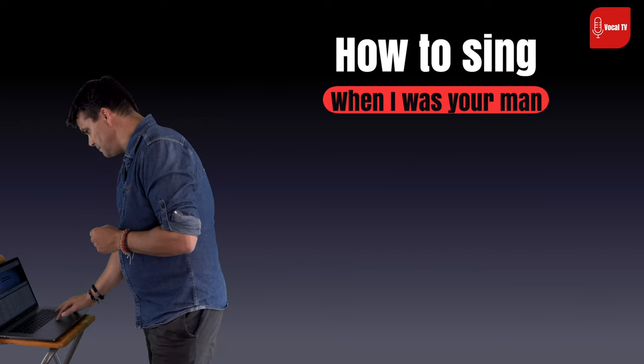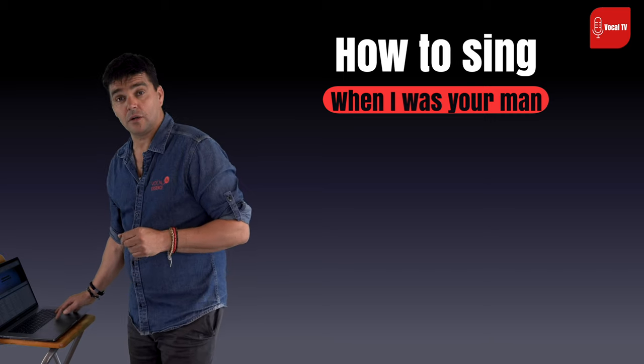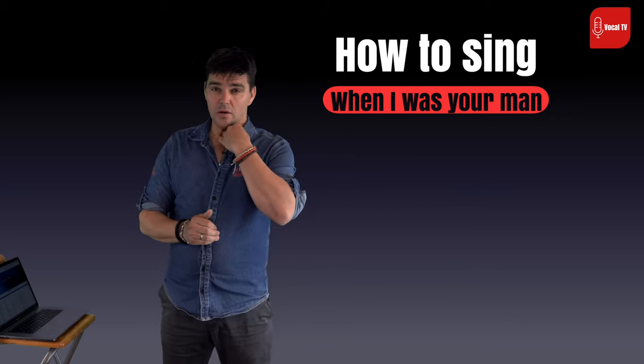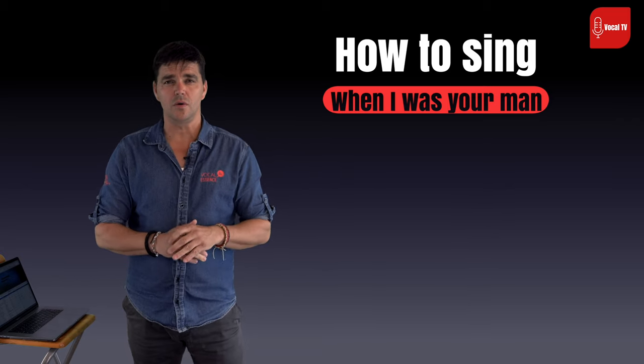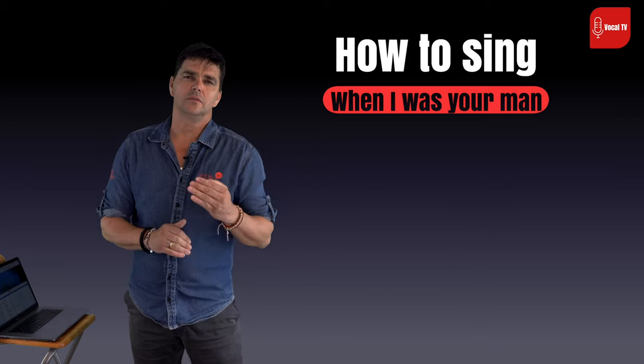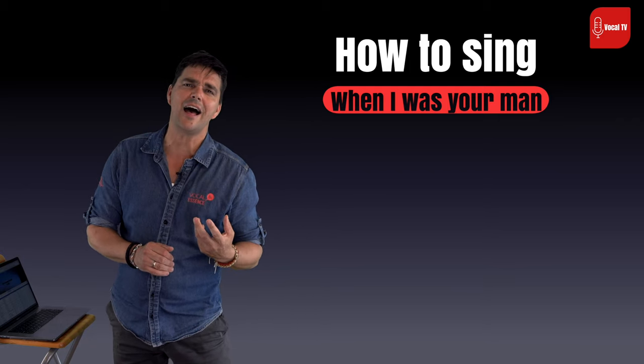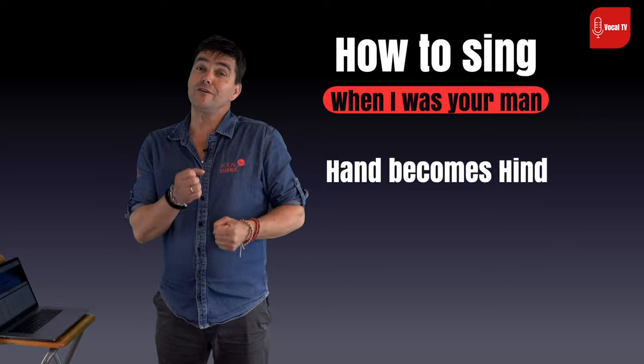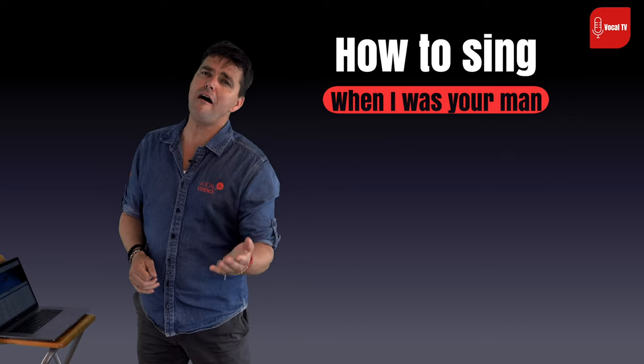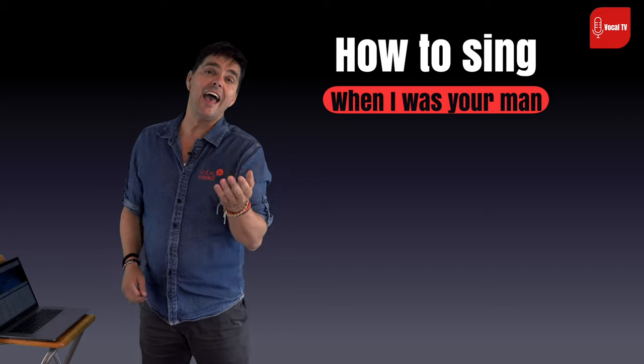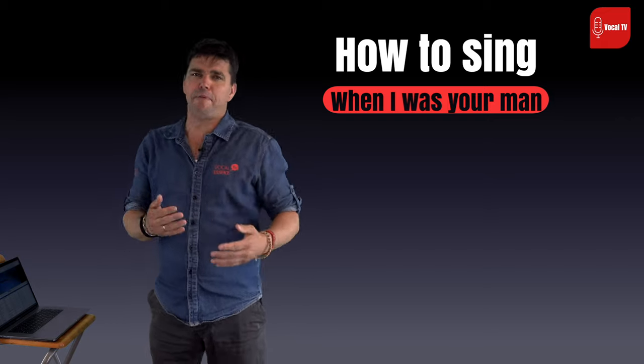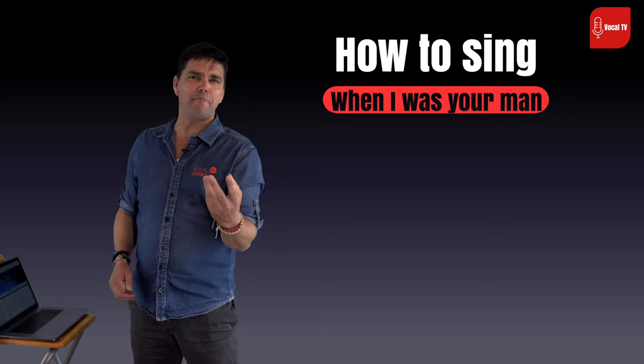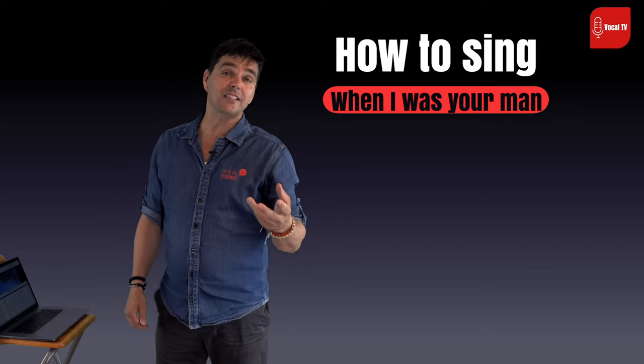I'm going to sing this part for you from the note of too young, too dumb to realize. Here we go: Too young, too dumb to realize that I should've bought you flowers and held your hand. Should've gave you all my hours when I had the chance. Take you to every party cause all you wanted to do was dance. Now my baby's dancing, but she's dancing with another man.